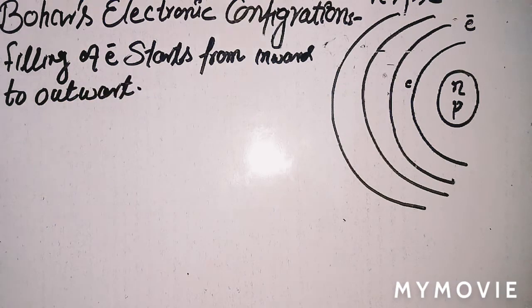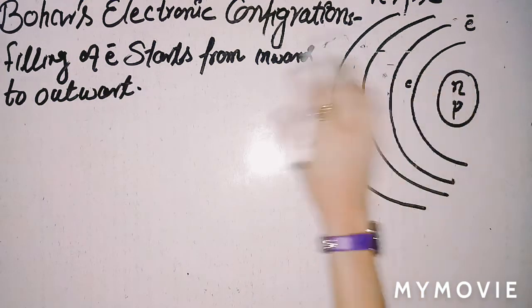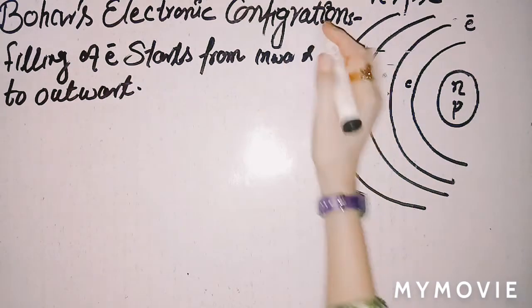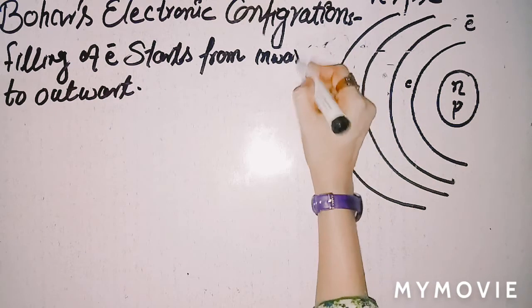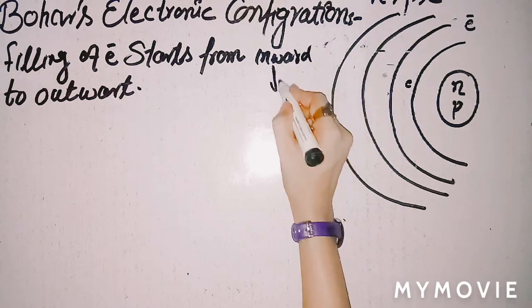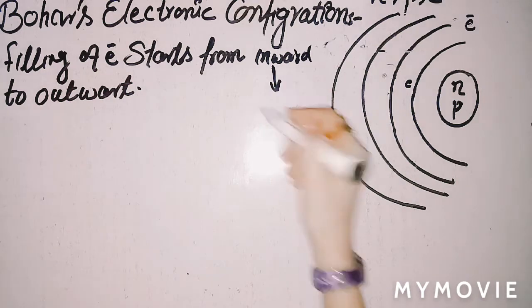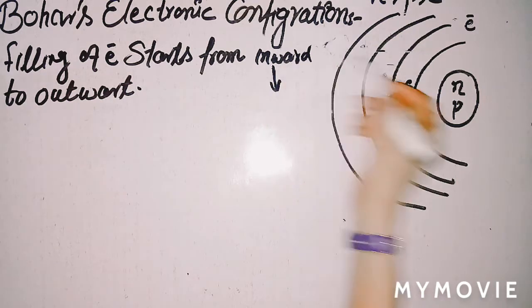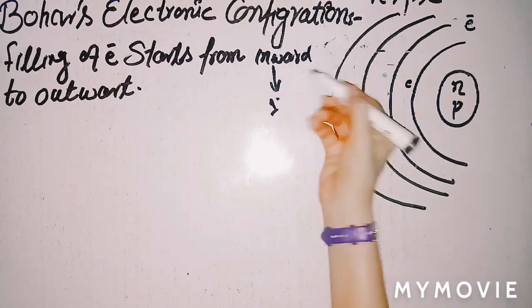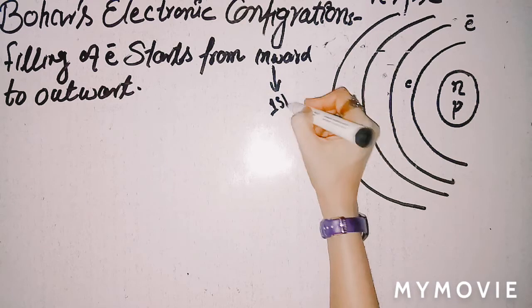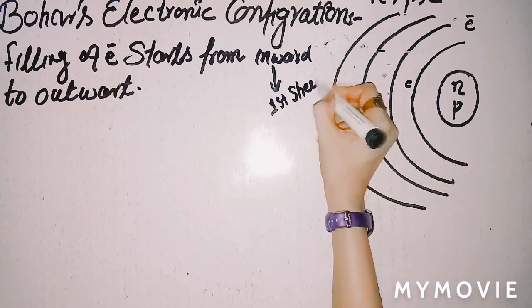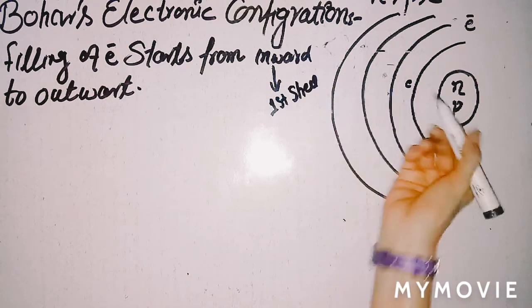This means that electrons are filled starting from the innermost position. 'Inner' means near to the nucleus — the first shell is nearest to the nucleus. So filling begins with the shell closest to the nucleus.